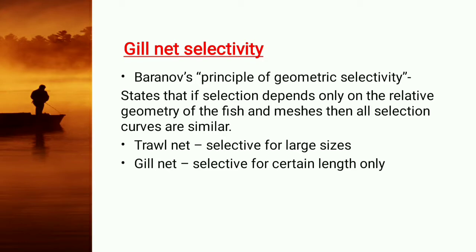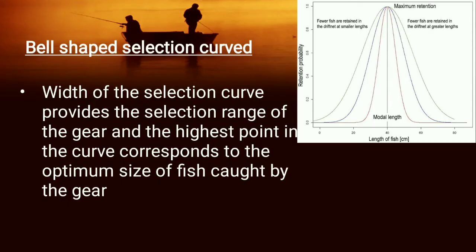We have to know that selection of fish depends on the geometry and size of the fish. If it depends on the meshes, then all selection curves will be similar. Trawl nets are selected for large fishes and gill nets are selected for a certain length only, so there are some differences. We have to know the bell-shaped selection curve — the image shows the bell-shaped selection curve.